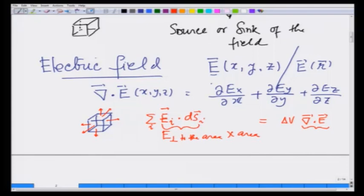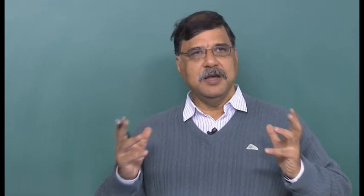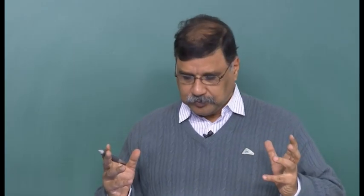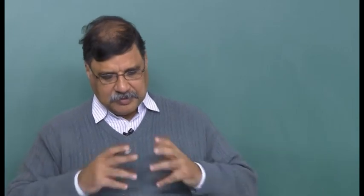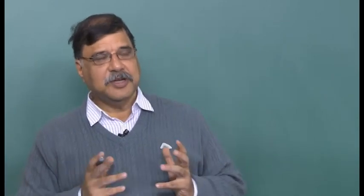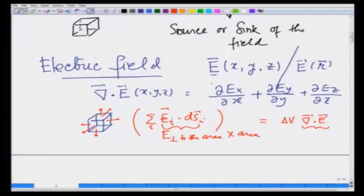Recall that if this quantity is zero there is no divergence, and therefore the integral of the field over the area has to be non-zero in order for divergence to be non-zero. This integral of E over the surface, in the case of the electric field, is defined as the flux.